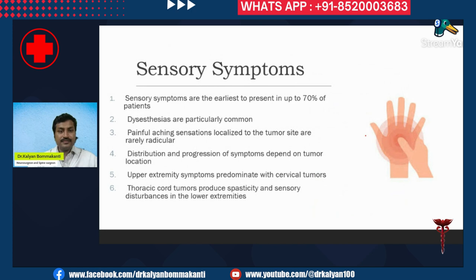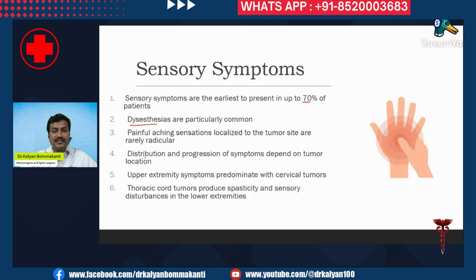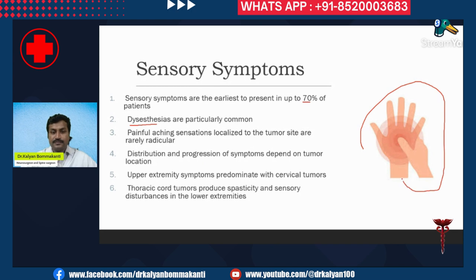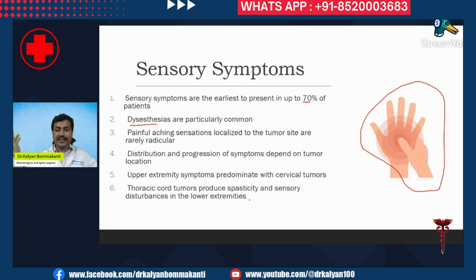Sensory symptoms are the earliest to present in up to 70 percent of patients. Dysesthesia — that is, abnormal sensations — is very common. Painful aching sensations can be seen at the tumor site. The distribution and progression of symptoms depend on tumor location: upper extremity symptoms predominate with cervical tumors, whereas thoracic cord tumors produce disturbances in the lower limbs, since the neck and head are not affected.